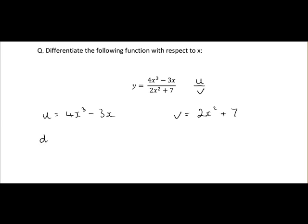So next we differentiate them. If we differentiate u, you get du/dx. So 4x cubed when we differentiate it, we get 12x squared, minus 3x differentiates to minus 3.